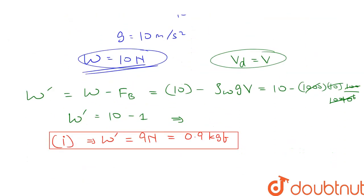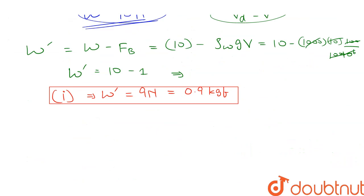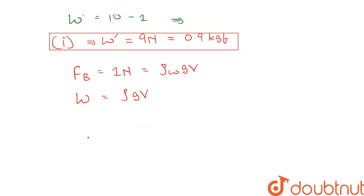In the second part, we need to find the relative density. So now we know that the buoyancy force FB is equal to 1 newton and is equal to the formula ρw into g into V. And the actual weight W is equal to ρ g V.